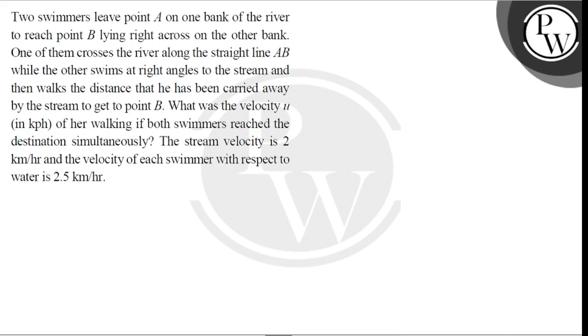The stream velocity is 2 kilometers per hour and the velocity of each swimmer with respect to water is 2.5 kilometers per hour. Suppose this is our river, and two swimmers go in it. One of them crosses the river along straight line AB. So if he has to go in a straight line, and the velocity of the swimmer with respect to the river and velocity of the stream, then the resultant is in this direction. This means how much time does it take to cross the width of the river?